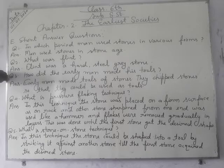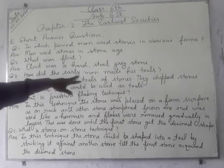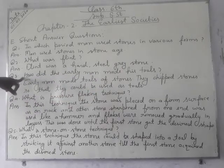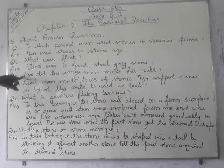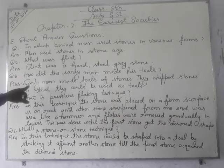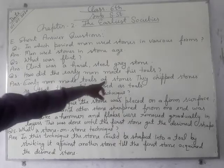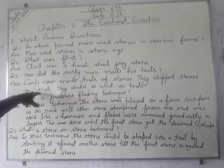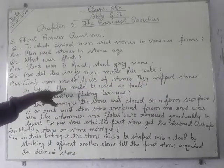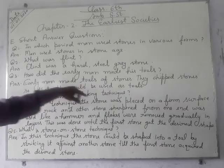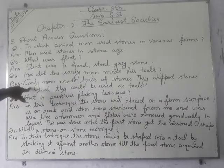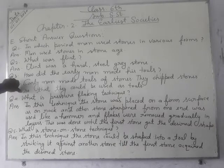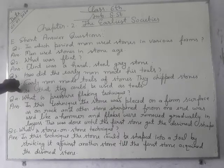Question number three: how did the early man make his tools? Early man made tools from stone. They chipped the stones so that they could be used as tools — they would cut the stone and shape it for their use.